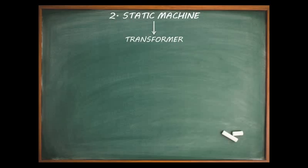Electrical energy is generated at places where it is easier to get water head, oil, or coal for hydroelectric, diesel, or thermal power plants respectively. Normally these sites are far away from big cities or industries, but the need for electricity is greater in those areas. So there has to be a device to transfer the generated electricity from these plants to the main load centers. Transformers step up or step down the voltage as needed, and they have electrical circuits linked by a common magnetic circuit.